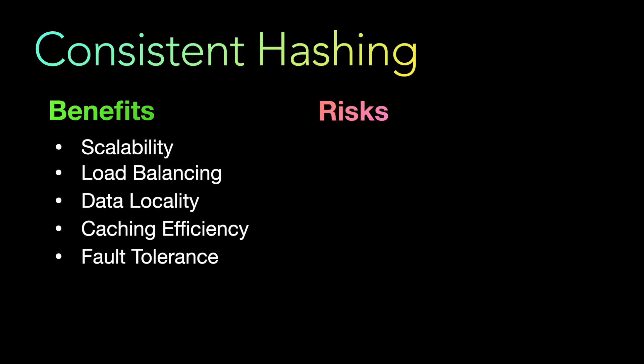Now let's look at some of the risks — not exactly disadvantages, but risks. First is hash function selection. The choice of hash function plays a crucial role in the effectiveness of consistent hashing. Different hash functions may have varying degrees of collision probability, distribution uniformity, and computational efficiency. Selecting an appropriate hash function that meets the specific requirements of your system is important to achieve a balanced and efficient distribution of data.